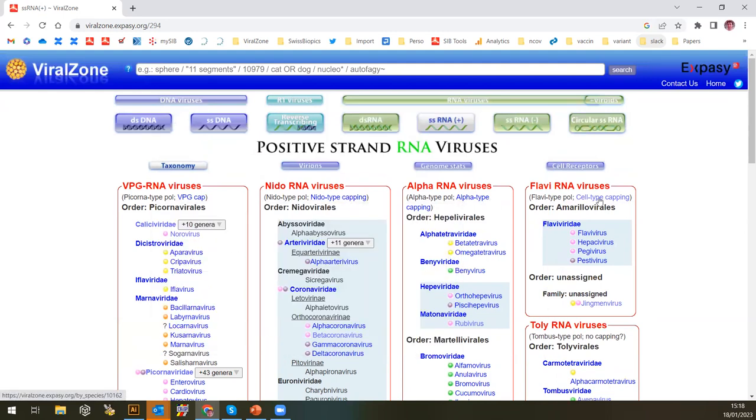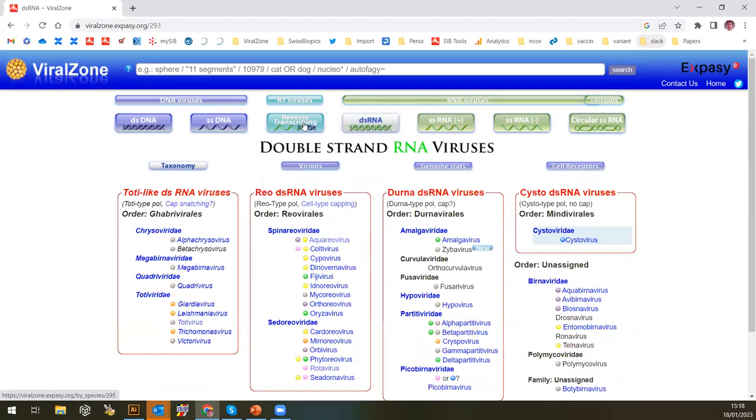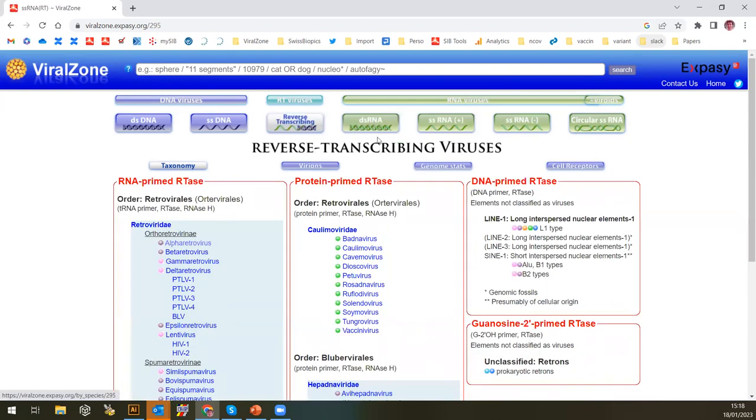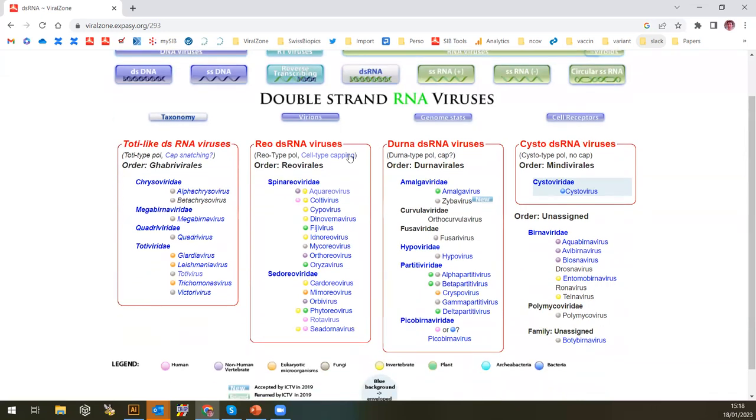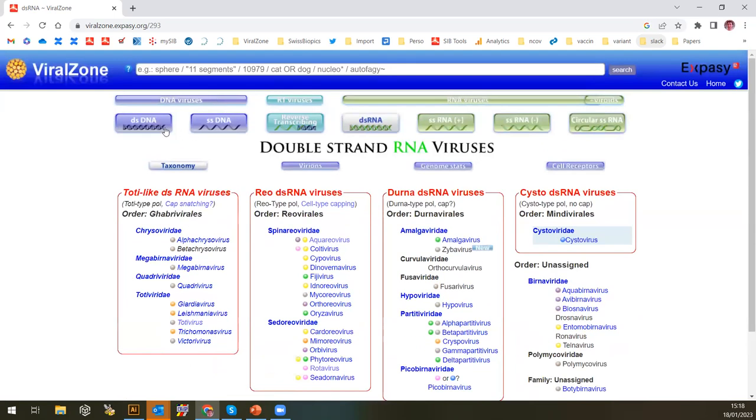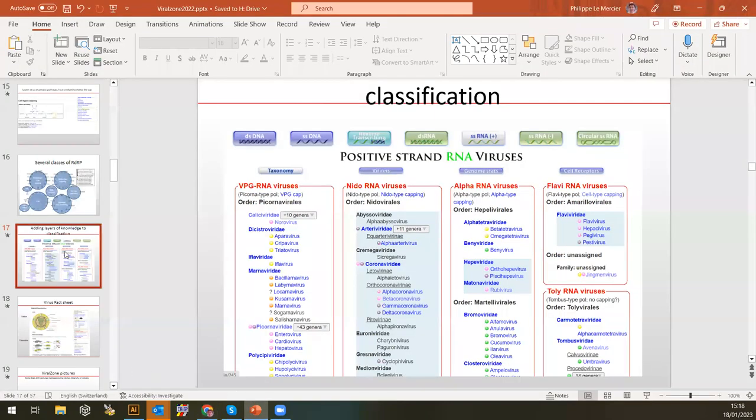You can see here you have the Baltimore classification. You can click and you access the classification of different viruses: reverse transcribing, double strand RNA. This one has a capping system. Of course, the DNA viruses don't have necessarily a special capping system compared to RNA, so we cannot do that for them.